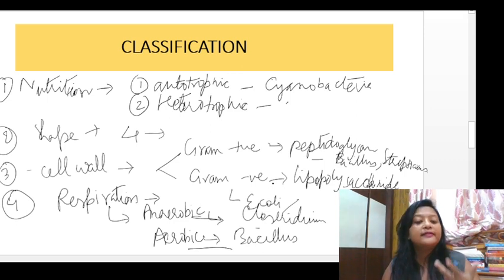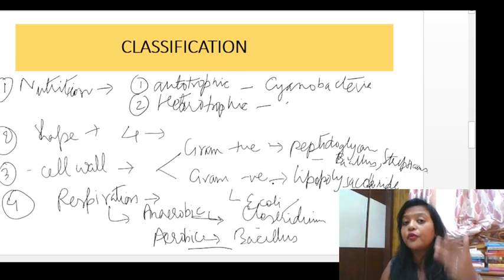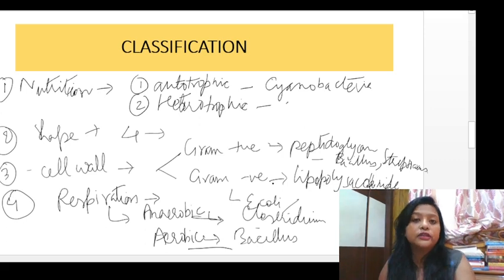So the four bases of bacteria classification are: nutrition, shape, cell wall components, and respiration.